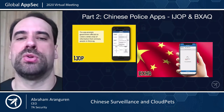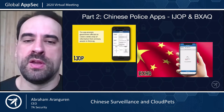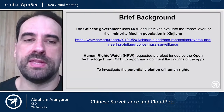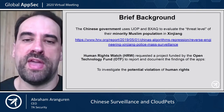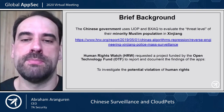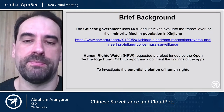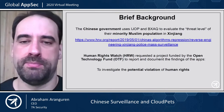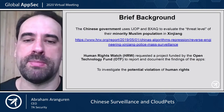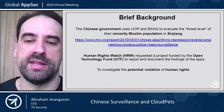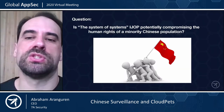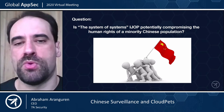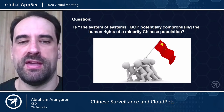Now let's talk about the Chinese police apps. I'm going to talk about a couple of apps that the Chinese government uses, called iJob and BXAQ. They are used to evaluate the threat level of their minority Muslim population in Xinjiang, which is an area in China with more people who are Muslim. Human Rights Watch requested a project funded by the Open Technology Fund to report and document the findings of the apps, to investigate the potential violation of human rights. This is not a security test like the previous one — it's more about what data they're collecting.